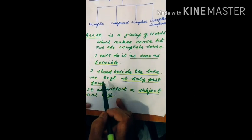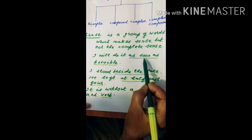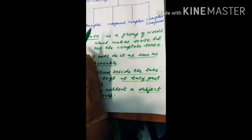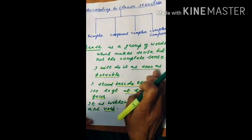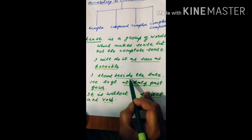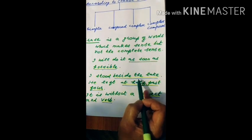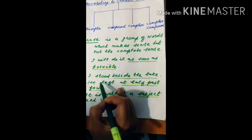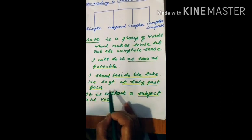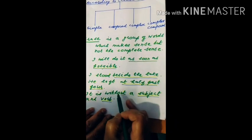Let's have a look at a few examples. 'I will do it as soon as possible.' Here, 'as soon as possible' is a phrase — it makes sense but not the complete sense. 'I stood beside the lake.' Here, 'beside the lake' is a phrase, as it makes sense but not the complete sense. For complete sense, you have to consider 'I stood.' 'He left at half past four.' Here, 'at half past four' is a phrase.